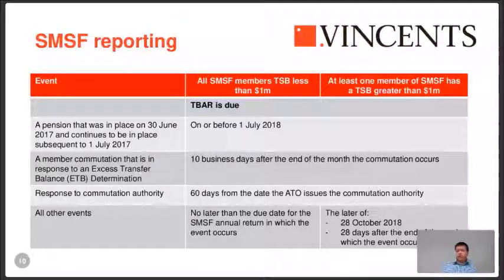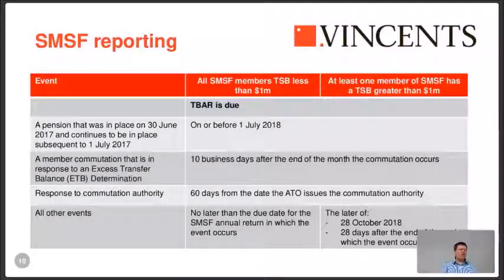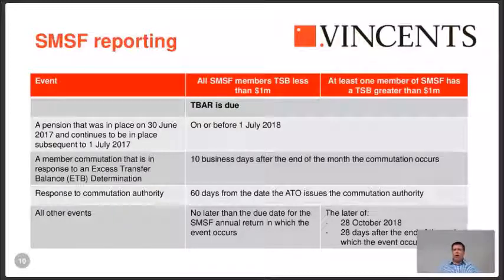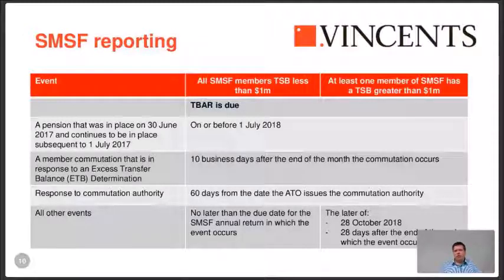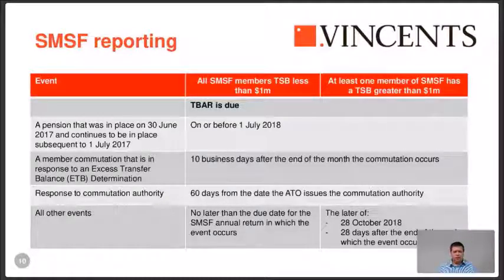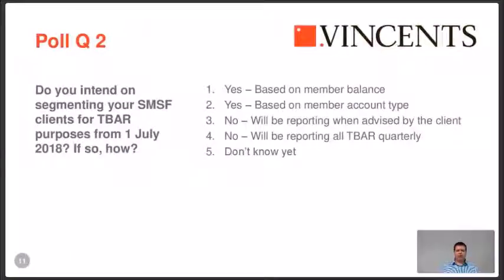Otherwise, it's due by the later of 28 October 2018. For any events between 1 July and 30 June this financial year, they must be reported by 28 October 2018 if a member has a total superannuation balance greater than $1 million. So if they've started a pension this year and have over a million dollars, you basically need to have the fund's accounts finished by 30 September. This is why we started the process some time ago — it's like GST for super funds: 28 days after the end of the quarter in which an event occurs.